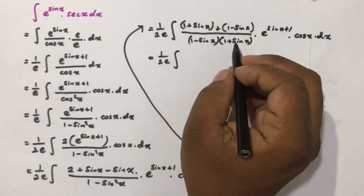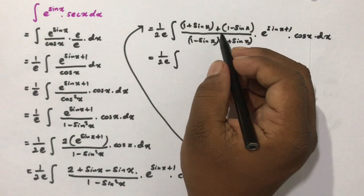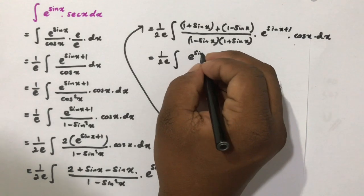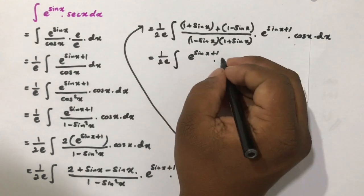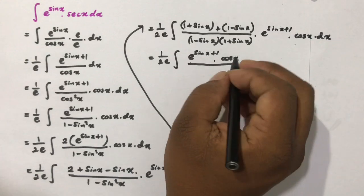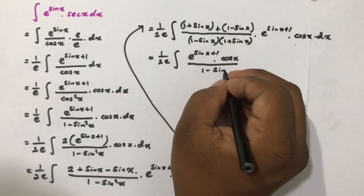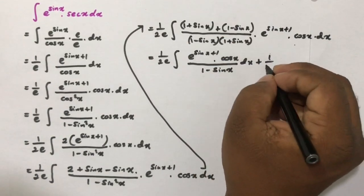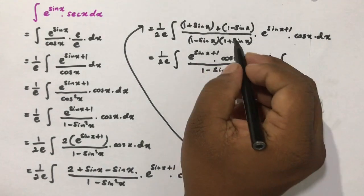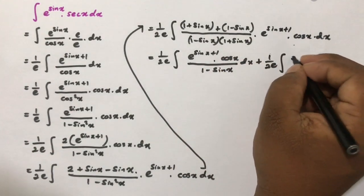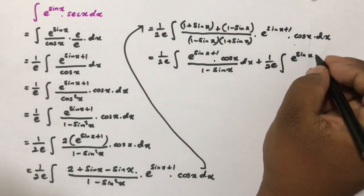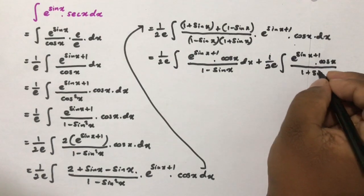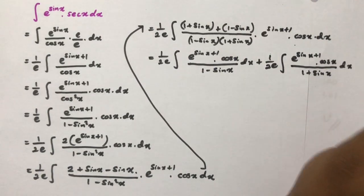Now 1 over 2 times e: dividing by 1 minus sine of x times 1 plus sine of x, the 1 plus sine of x cancels in the first term, leaving e to the sine of x plus 1 times cosine of x over 1 minus sine of x dx. Plus 1 over 2 times e: the 1 minus sine of x cancels in the second term, giving e to the sine of x plus 1 times cosine of x over 1 plus sine of x dx.